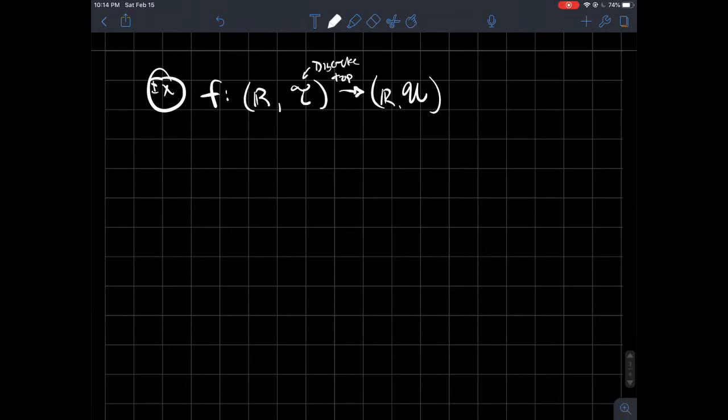And remember, that meant that every single subset of R is going to be called open. And we're going to let this be the usual topology. So just like, you know, good basis for this one is like open intervals, a comma b. One that we're used to. And so we're just going to let this be like the identity.